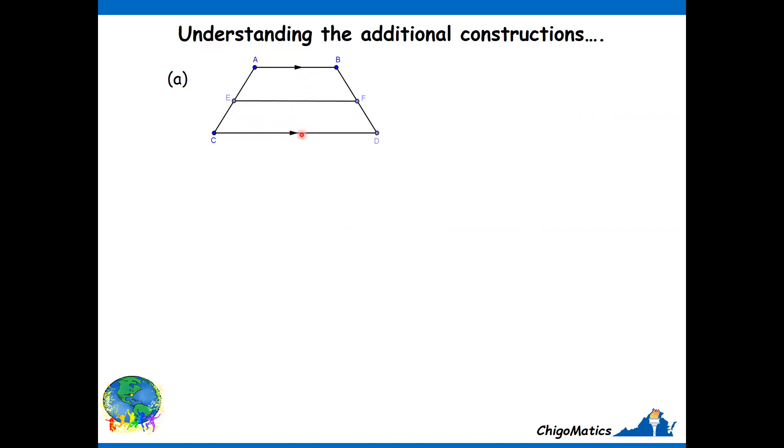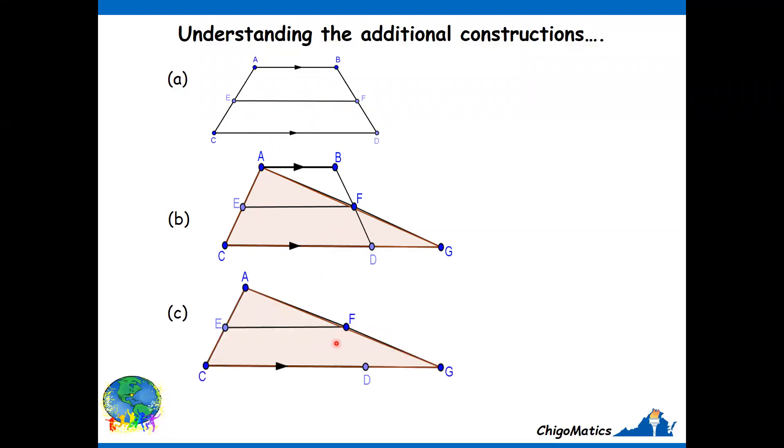Let us understand the additional constructions. Looking at the parallel lines, what came to mind was I need to come up with some triangles, then work with those triangles until I demonstrate that EF is parallel to CD. To do that, I joined from A through F to G. The shaded triangle is the major triangle that will allow me to say EF is parallel to CD. We need to use triangles ABF and FDG to show that AF is equal to FG.